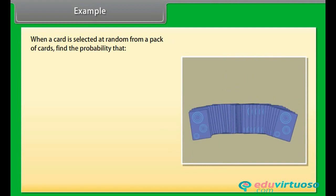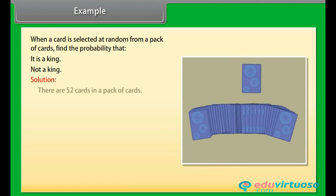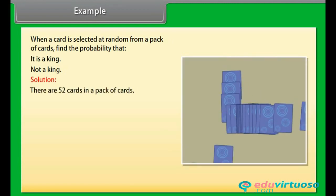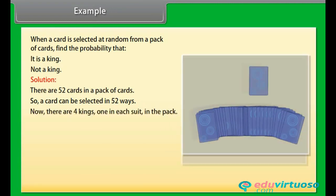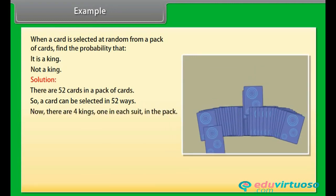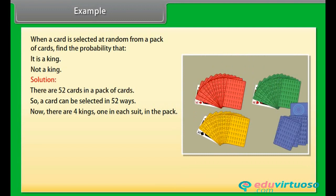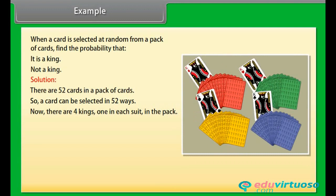When a card is selected at random from a pack of cards, find the probability that it is a king or not a king. Solution: There are 52 cards in the pack of cards, so a card can be selected in 52 ways. Now, there are 4 kings, one in each suit, in the pack.